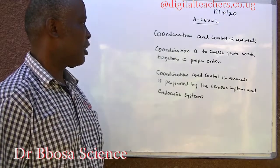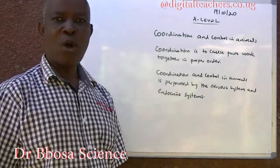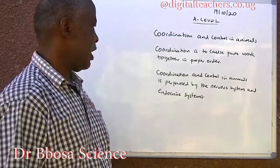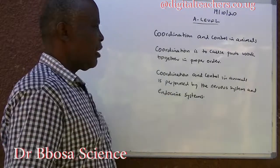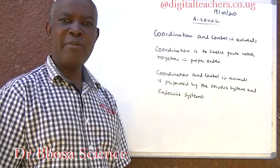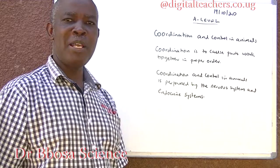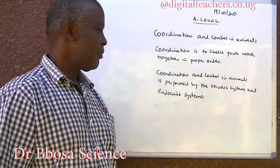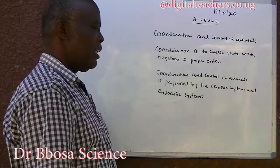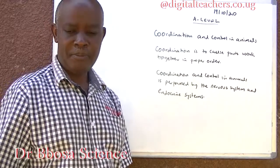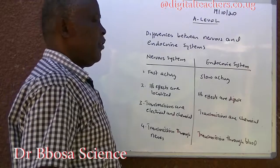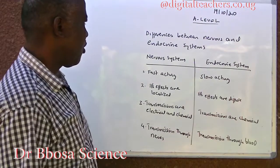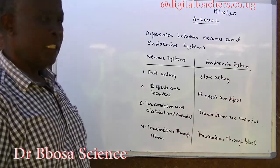Coordination is to cause parts to work together in proper order. Coordination and control in animals is performed by both the nervous system and the endocrine system. Differences between the nervous system and the endocrine system.